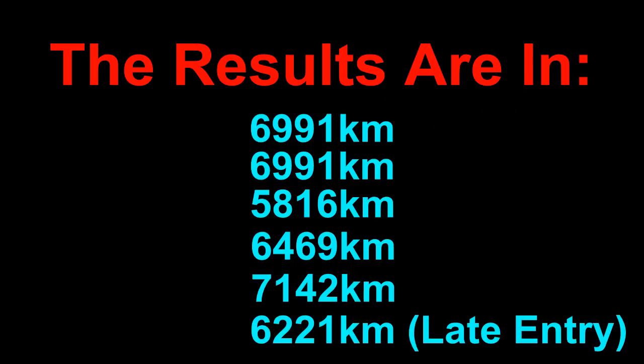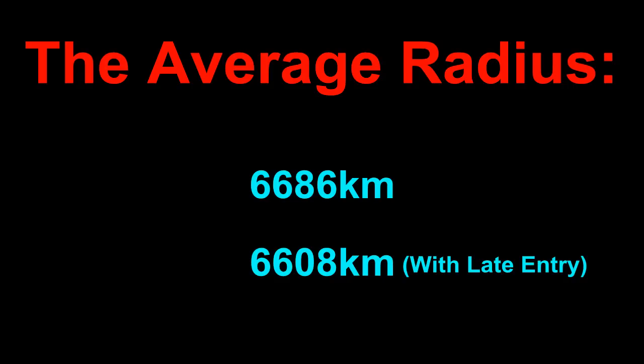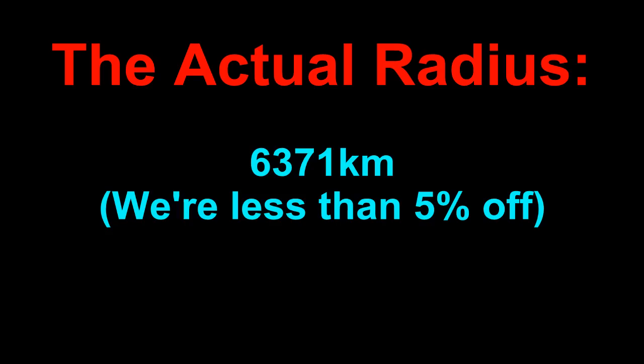Doing that calculation for every pair of data points gives us the following radii for the Earth. Averaging the five results gives us a radius of 6,686 kilometers. That's only 5% off the actual value of 6,371 kilometers.